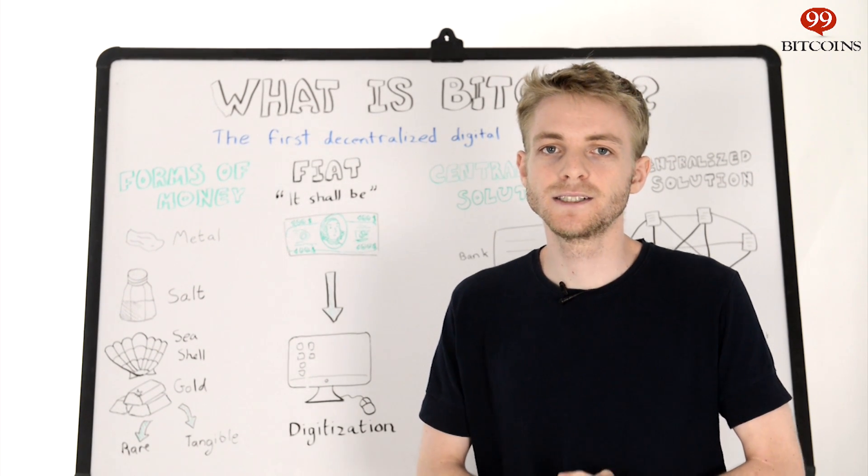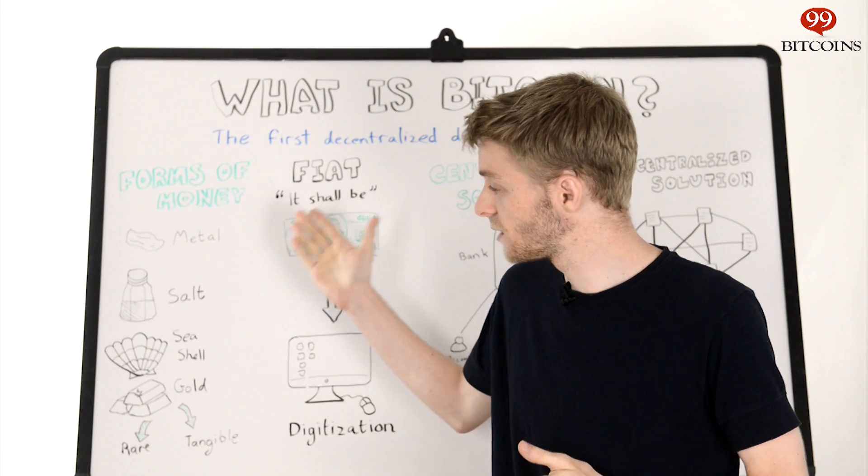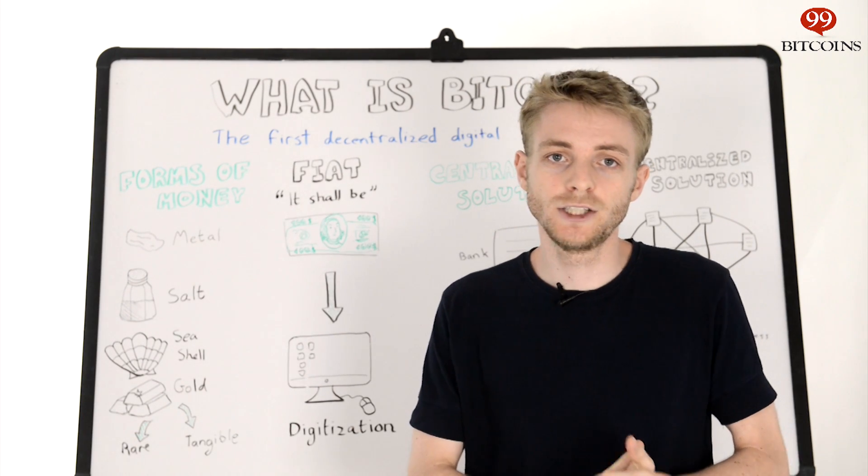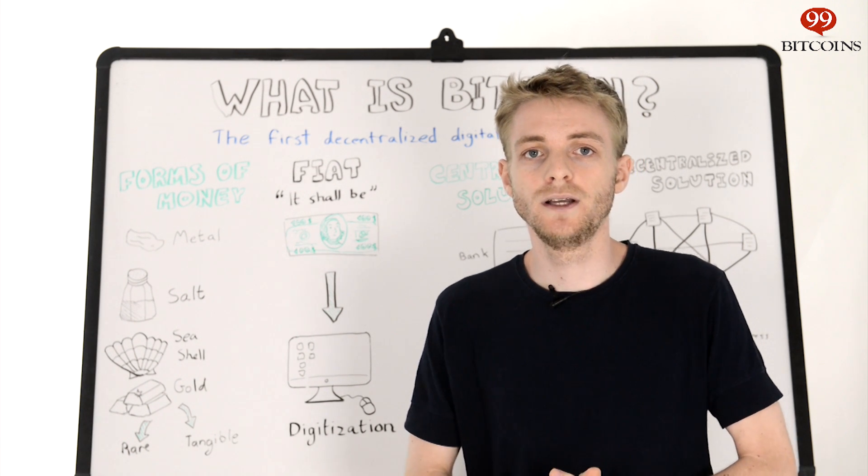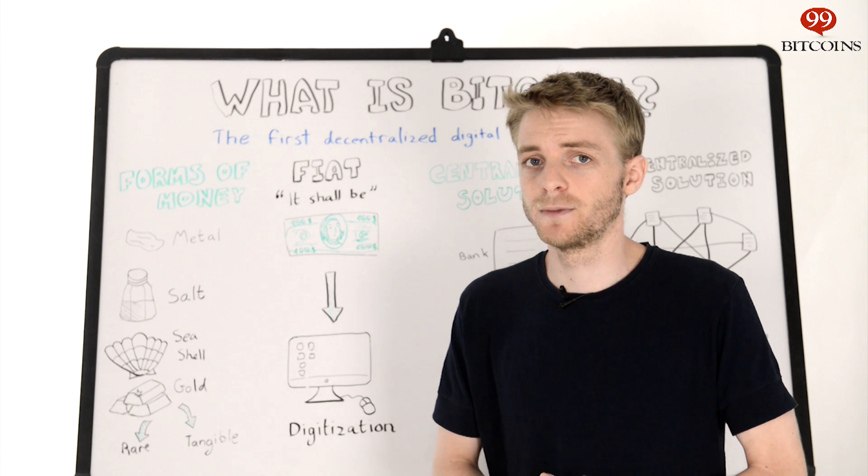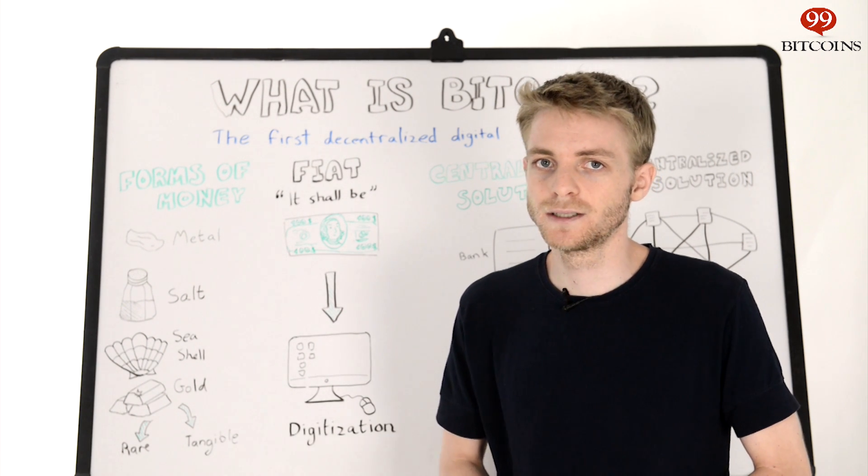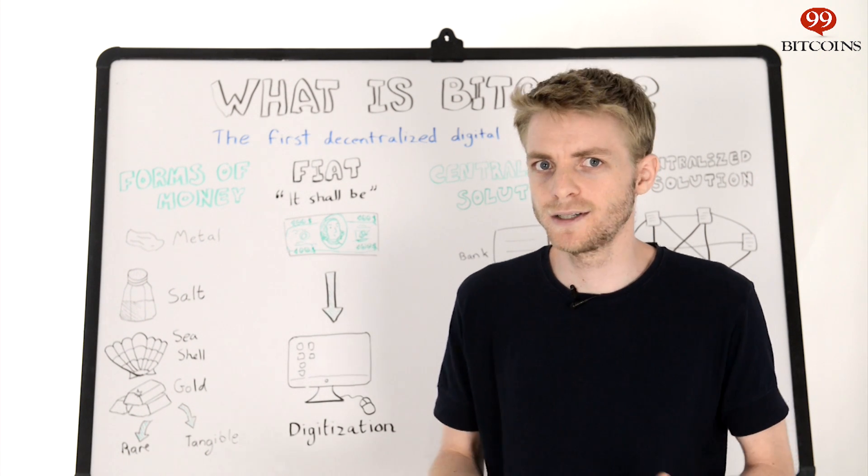Well, money ultimately is simply the tool that we use to exchange value. Throughout history we've used lots of things as money from seashells to precious metals and salt. The most popular money historically has been gold and there's good reason for this. Gold works really well as money. It's rare so it's not worthless and it's tangible, so if you're holding it in your hand it's probably yours.